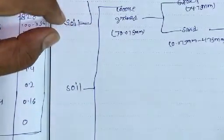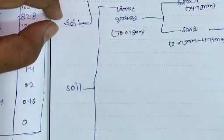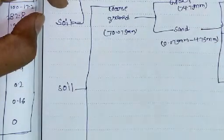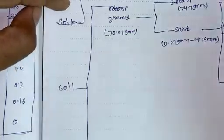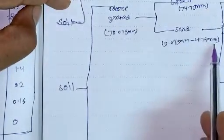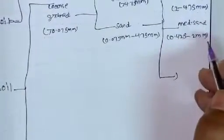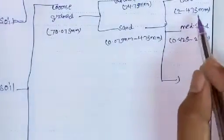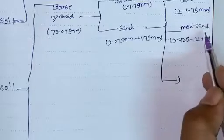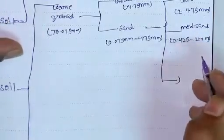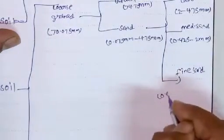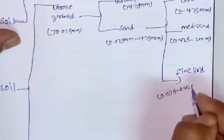Soil is classified into different categories. Coarse-grained soil is when soil particles are greater than 0.075 mm. Coarse-grained soil is further divided into gravel (retained on 4.75 mm sieve) and sand (between 0.075 mm and 4.75 mm). Sand is further divided: 4.75–2 mm is coarse sand, 2–0.425 mm is medium sand, and 0.075–0.425 mm is fine sand.